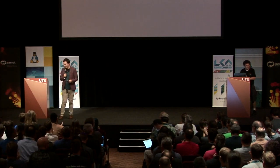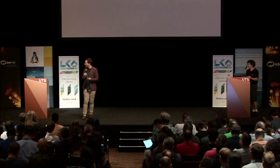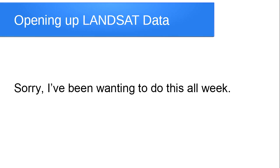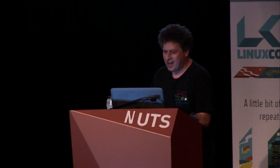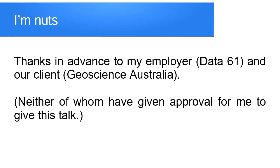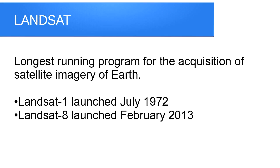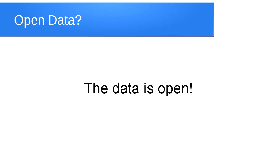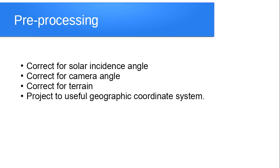Thanks, Steve. From hardware hacking to data — Paul Hasler is going to tell us about opening up Landsat imagery. Why am I nuts? Because I'm giving a talk about a work project I haven't had clearance for from my employer or client — but it's all open source, so that should be fine. Landsat is a NASA project, launched in 1972. The most recent is Landsat 8, launched in February 2013 — 30-meter resolution, seven spectral bands with 12 bits of dynamic range per band, images of any given point on Earth every 16 days.